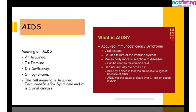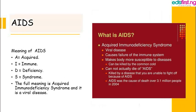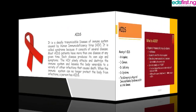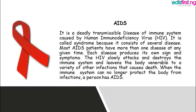Note that a lot of people often mistake HIV for AIDS, but they are not the same. AIDS means Acquired Immunodeficiency Syndrome. It is called a syndrome because it consists of several diseases. Most AIDS patients have more than one disease at any given time, and each disease produces its own signs and symptoms.